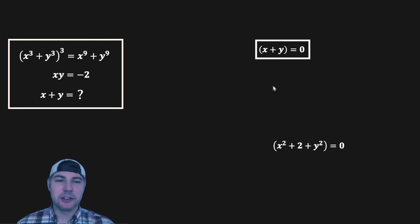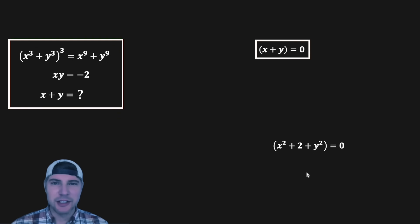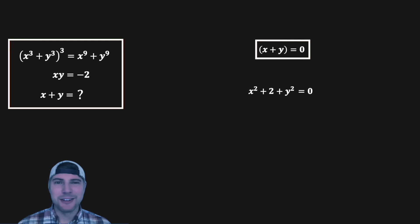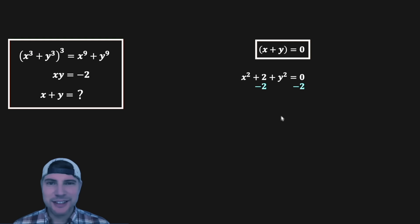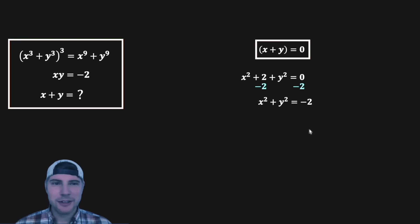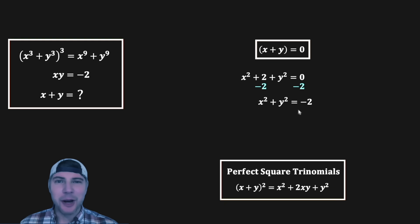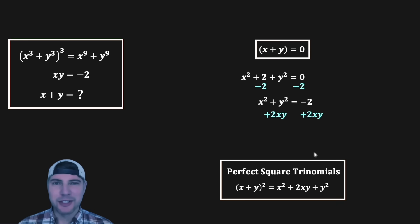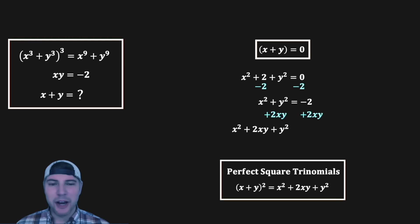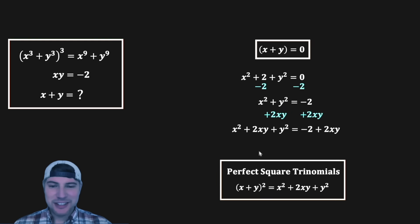Many people wanted to see the imaginary solutions from the other factor. Starting with x² - xy + y² = 0, we substitute xy = -2, giving x² + y² = -2. To use the perfect square trinomial identity, we add 2xy to both sides: x² + 2xy + y² = -2 + 2xy.